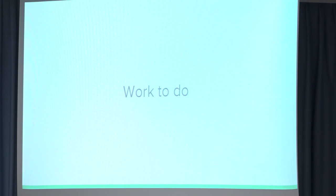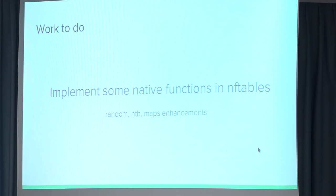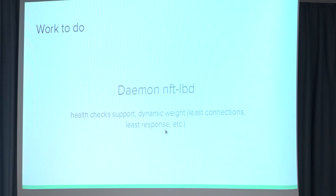What is the work to do? We have to implement some minor changes to NF tables — random, for which there is currently a patch, NTH for round robin, and some map enhancements to correctly perform IP persistency. The user space daemon will be the most significant workload, in order to perform health checks at different layers and dynamic weights for weighted least connections, least response, or least CPU load schedulers.